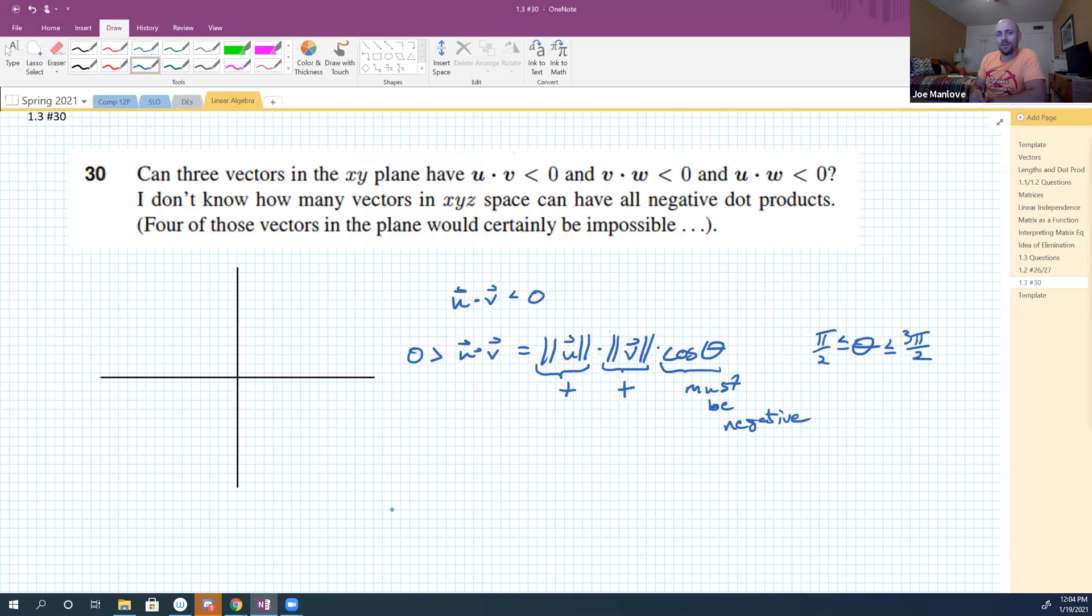So thetas have to be bigger than 90 and smaller than 3π/2. That would be quadrants two and three. That's what you said, right Karen? Yeah, between second and third quadrants it's negative, and first and fourth quadrants it's positive. Do you use a mnemonic for that?